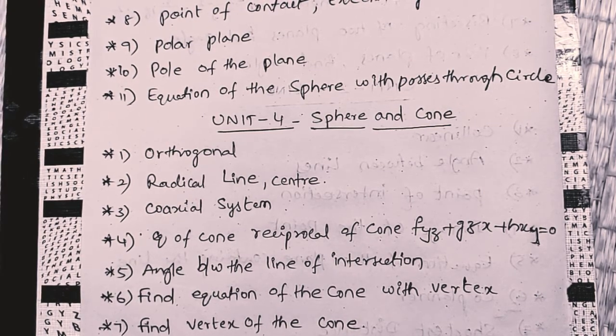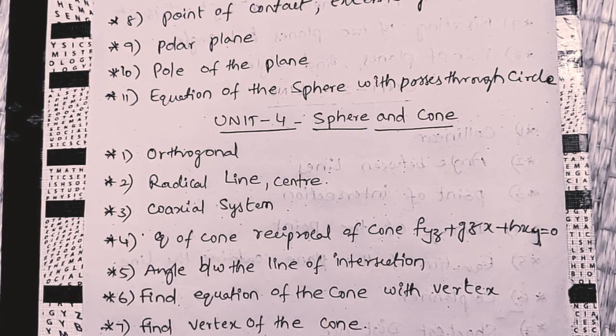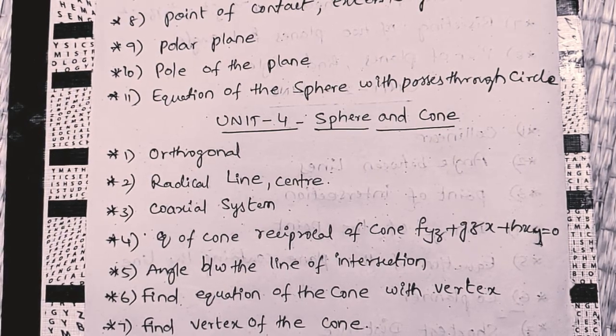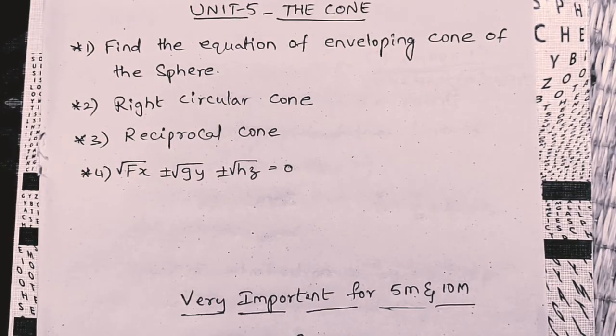5 marks, very, very important, friends. Next, fifth unit, equation of the line. The cone.